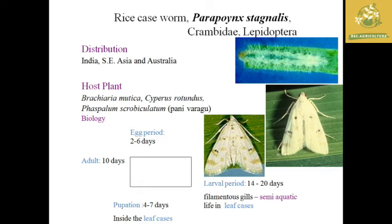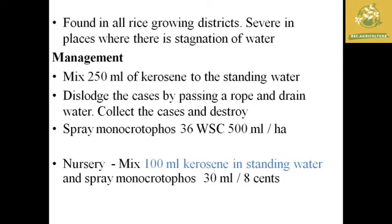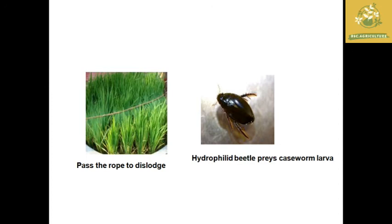Case worms are differentiated by two ways: a layer-like appearance on the removed plant tissues, and non-uniform damage patterns throughout the field. Management practices: apply 250 ml of kerosene to standing water, or spray monocrotophos at 500 ml per hectare. Pass a rope to dislodge them from leaves. Release hydrophilid beetles which prey on the case worms.